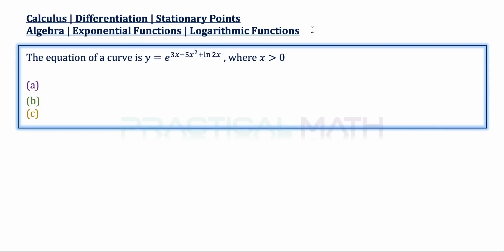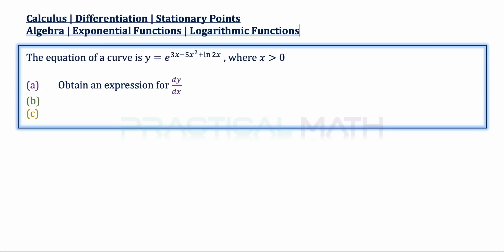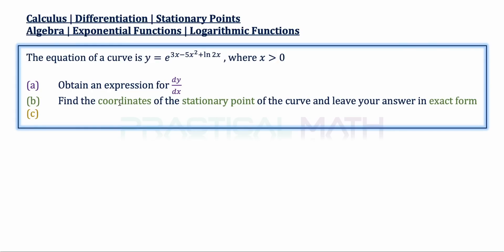The question gives a curve whose equation is y equals e to the power of 3x minus 5x squared plus ln 2x, where x is greater than 0. In part A, you are to obtain an expression for dy/dx, and in part B you are to find the coordinates of the stationary point of the curve, leaving your answer in its exact form.